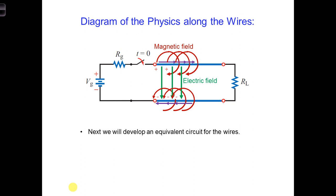We know the moment we close the switch, electric and magnetic fields will be generated between and around the conductors, which will travel at nearly the speed of light down the transmission line.